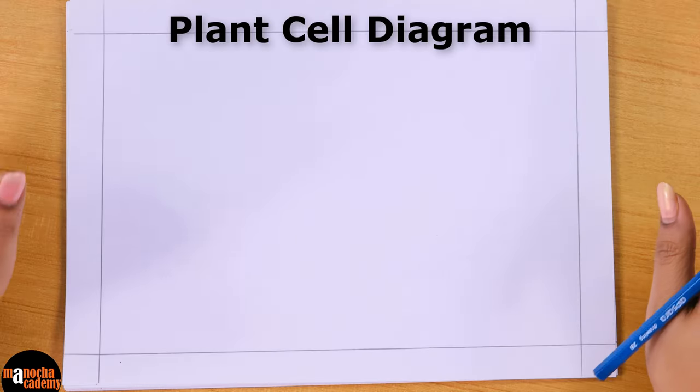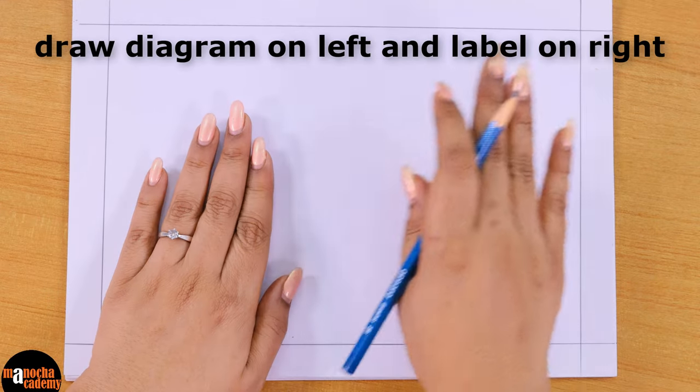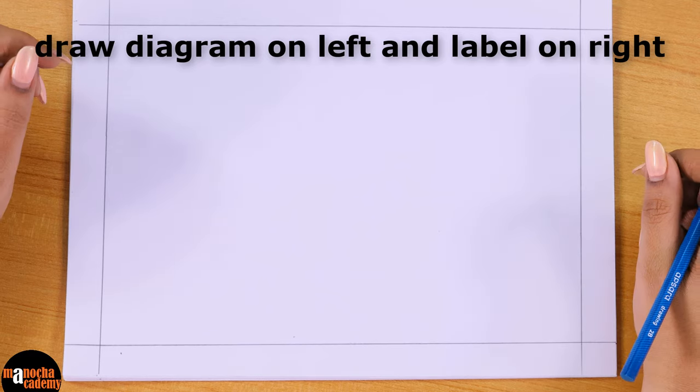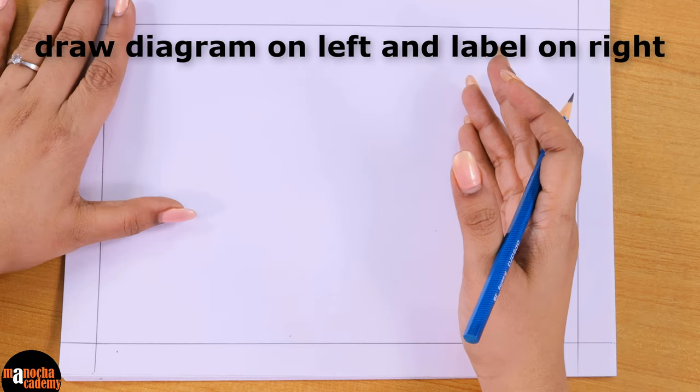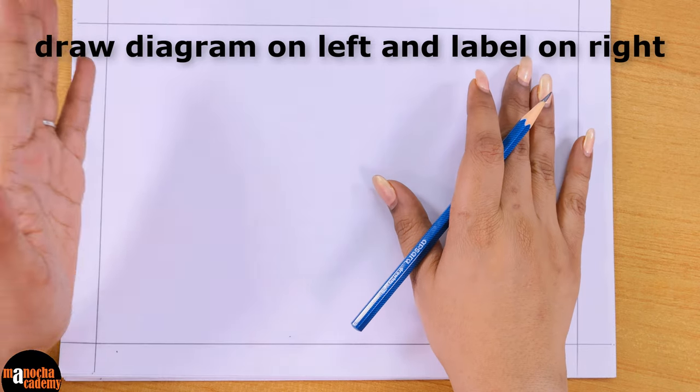First and foremost, I will keep the diagram towards the left-hand side of the page so that I can keep my labeling towards the right. It might not be possible always to label everything on the right, but we will try to keep as many labels on the right and a few we can still label on the left.